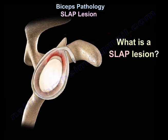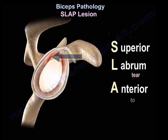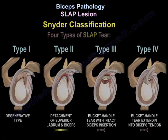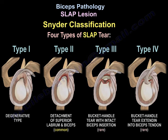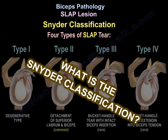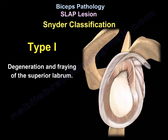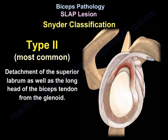What is a SLAP lesion? SLAP means superior labrum tears from anterior to posterior. The Snyder classification is 1 to 4. Type 1 is degeneration and fraying of the superior labrum. The most common type is Type 2.